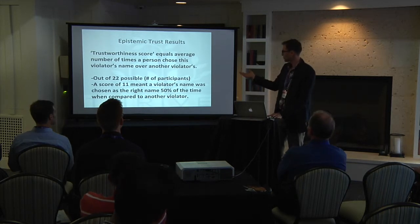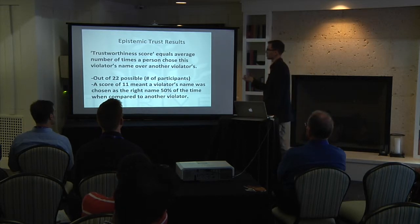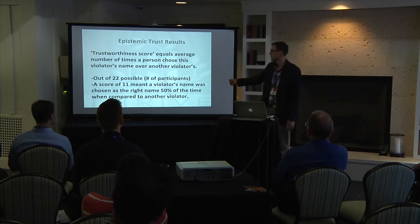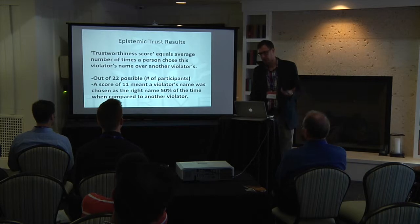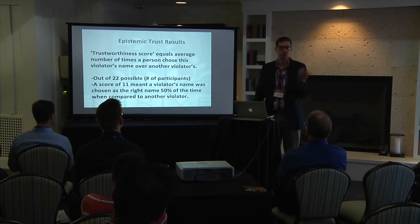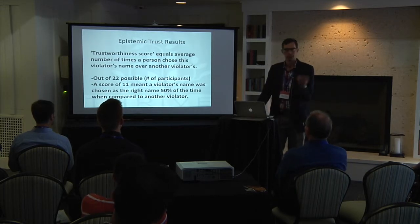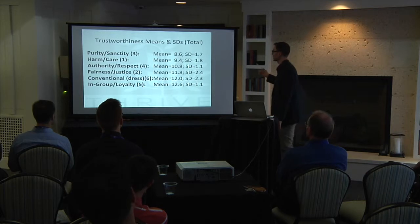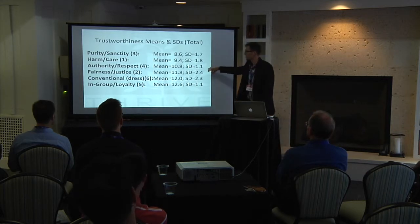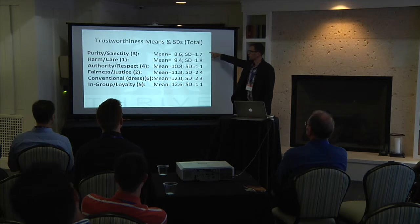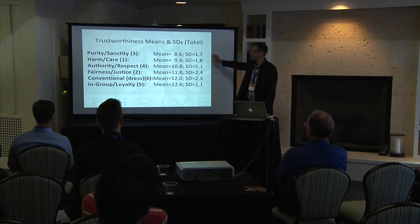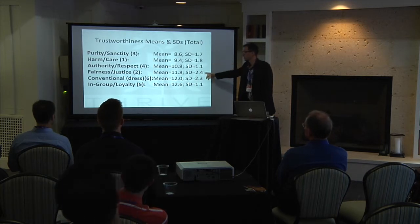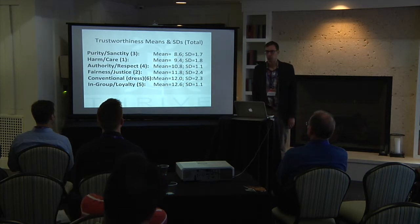Our proxy for trustworthiness score was the average number of times a person chose the violator's name over another violator. We had 22 different participants, so a particular person could have been chosen up to 22 times. A score of 11 meant basically 50 percent — this person got chosen just as much as anybody else and is not necessarily more trustworthy than anybody else.